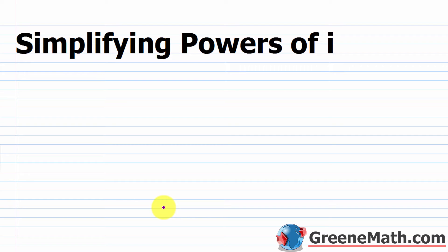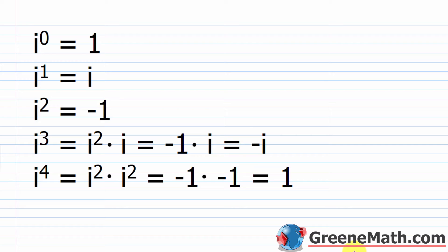In this lesson we want to review simplifying powers of i. Over the course of the last two lessons we talked about the imaginary unit i and complex numbers in general and how to perform operations with complex numbers. One more topic that comes up when you first start looking at imaginary units is how to simplify powers of i. So if you get something like i raised to the power of 503 you are expected to write that in a simpler form.